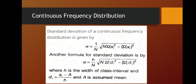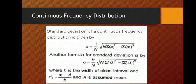In case of a continuous frequency distribution, if you remember the step deviation method, we change xi to (xi minus a) upon h. This formula is also called the shortcut formula because it reduces the calculations and allows you to arrive at the result very easily.